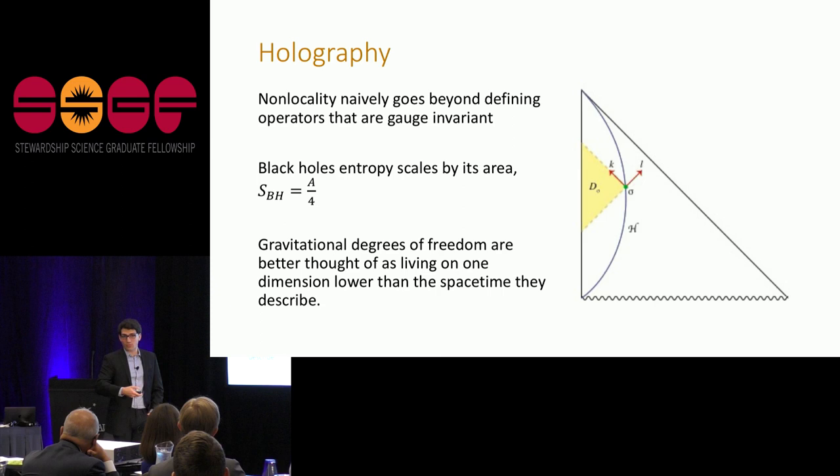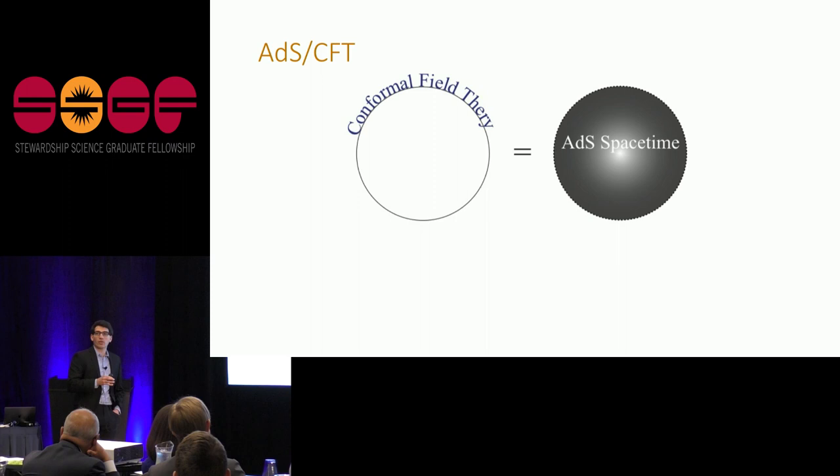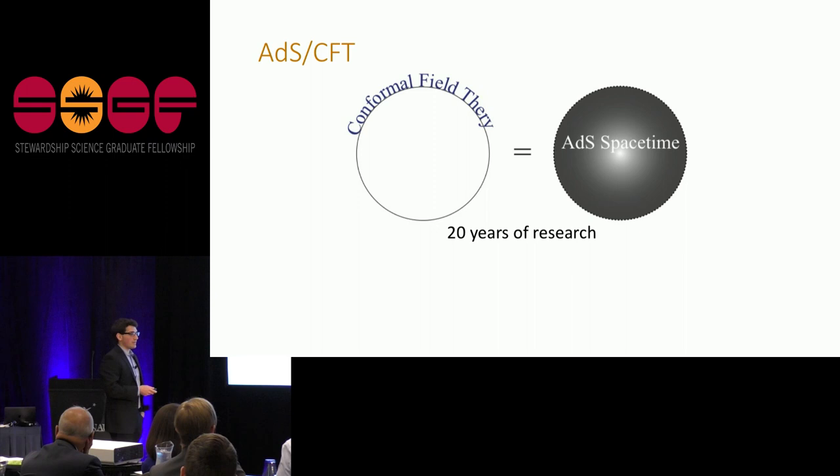And we know just from statistical mechanics that entropy is a measure of number of degrees of freedom. So there's some already hint here that the number of degrees of freedom in black holes, which is an inherently gravitational object, is scaling like its area and not its volume. So this is just to paint a picture, but we have a concrete example of this, and it's called the Anti-de Sitter Conformal Field Theory Correspondence. So thankfully, I'm not going to go too in-depth about this, but we have an example of this, and there's some derivation from string theory, but it's more or less mathematically precise. And it came out at the end of 97, and we've had 20 years of research. It's actually the most highly cited paper in my field.